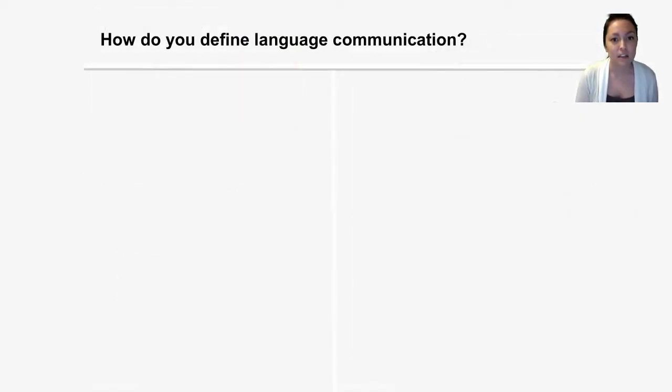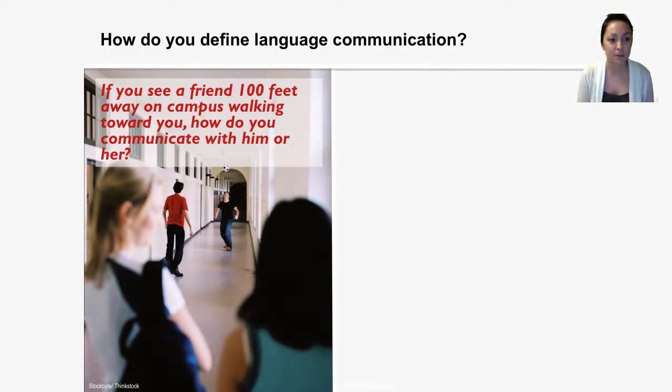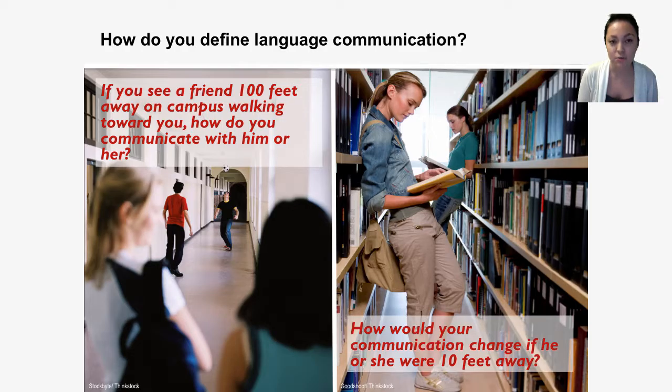How would we define language communication? For example, if you were to see a friend walking a hundred feet away from you, how might you communicate with this person? You might shout out their name, you might wave to them, or you might just shout a quick hey. How would this change if the same person were ten feet away from you or even closer? You might not shout at them, but you would probably use a softer, more inside voice and you would probably be able to have more intimate conversation with them rather than just shouting a quick hey.